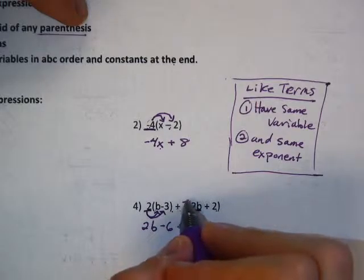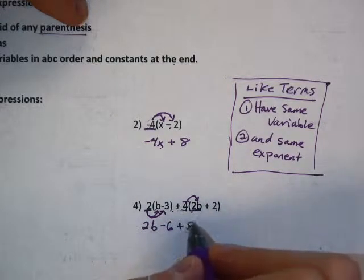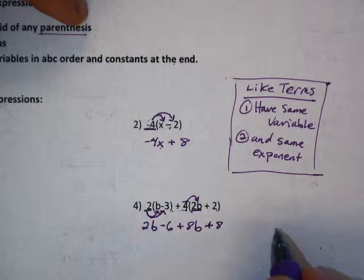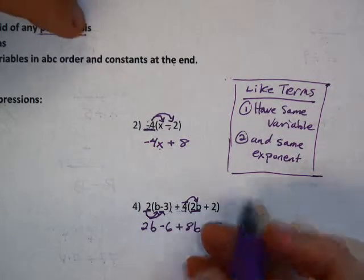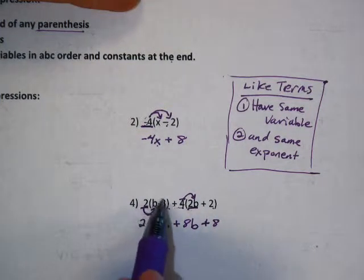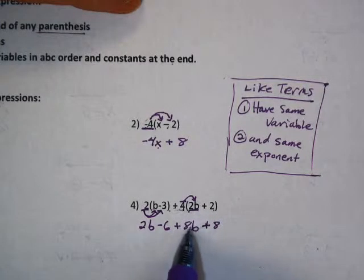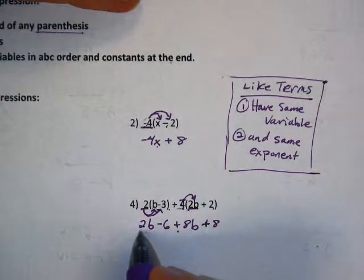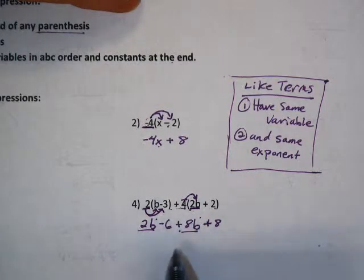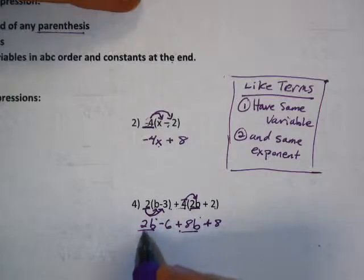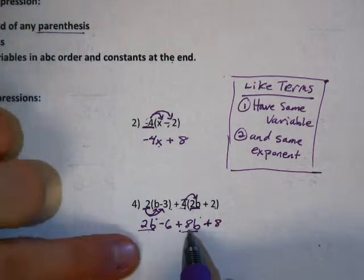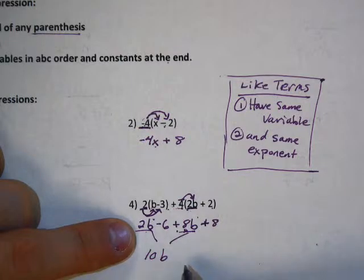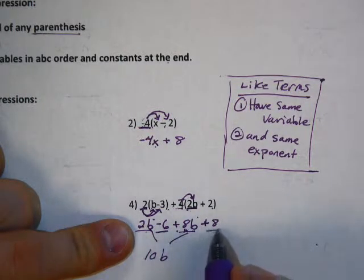We have 2 sets of parentheses which means we're going to distribute twice. So 2 times b. Now the arrow came under. It doesn't matter. It's still 2 times b. So 2 times b. And then also 2 times negative 3. So negative 3 times positive 2 is negative 6. Now over here. We're adding. So we're going to continue to add. Positive 4 times positive 2b. So positive 4 times 2b. That's 4 times 2 is 8b. And then 4 times positive 2. That's positive 8. Notice how I didn't lose the variable. I didn't lose any numbers. I had 2 pieces in here. And I'll have 2 pieces when I'm done multiplying. I have 2 pieces in here. I have 2 pieces when I'm done multiplying. I'm adding here. So we're going to continue to add.